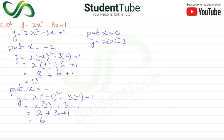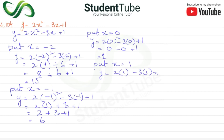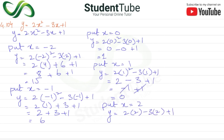Then put x = 1. So y = 2(1)² - 3(1) + 1. So 2 times 1 is 2, minus 3, plus 1. So 2 - 3 + 1 = 0. And for x = 2: y = 2(4) - 3(2) + 1 = 8 - 6 + 1 = 3.